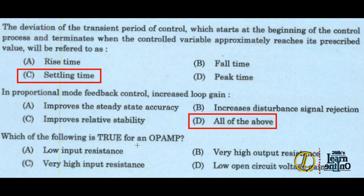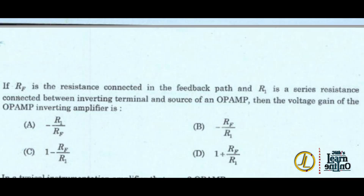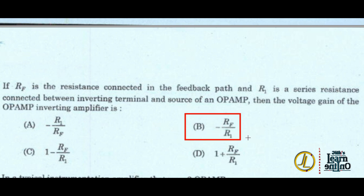Next: which of the following is true for an op-amp? It has very high input resistance — option C. Next: if Rf is the resistance connected in the feedback path and R1 is the series resistance connected between the inverting terminal and source of an op-amp, then the voltage gain of the inverting amplifier is minus Rf divided by R1 — option B.